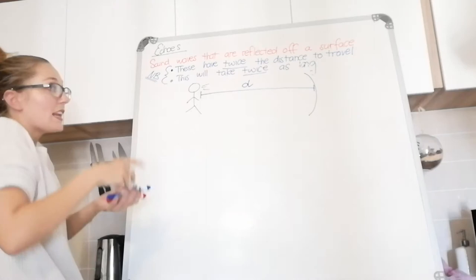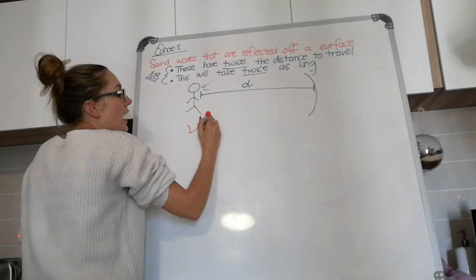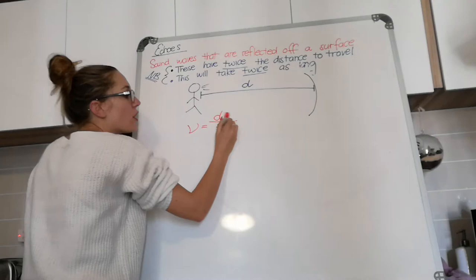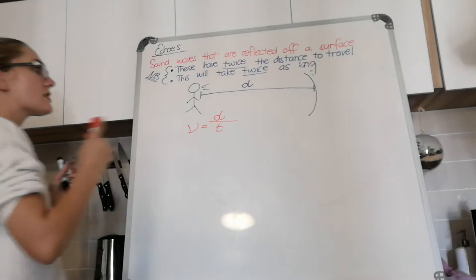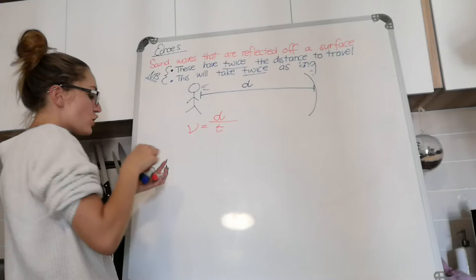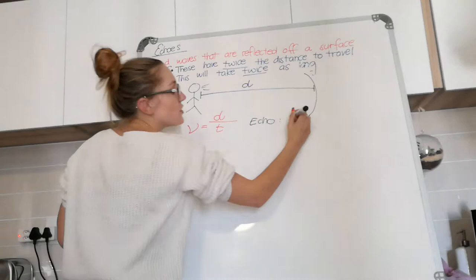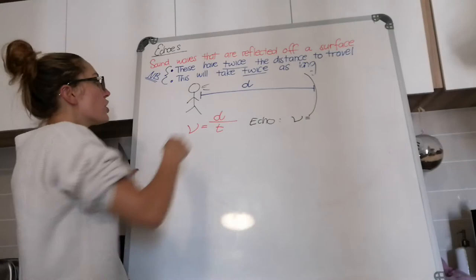Let's say we know the speed of sound in our medium, so in air in this case. We know that the speed of a wave is equal to the distance it travels over the time it takes to travel that distance. But this time the wave itself is actually not just traveling there, it's traveling there and back. So when you do echo calculations, we need to tweak this formula so that the velocity or the speed of your sound wave is actually equal to twice the distance over the time given.